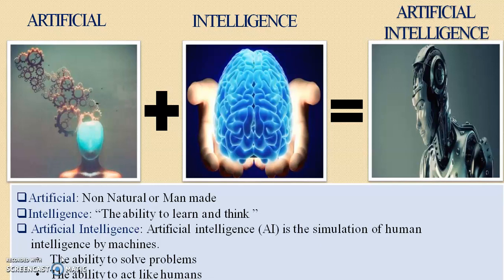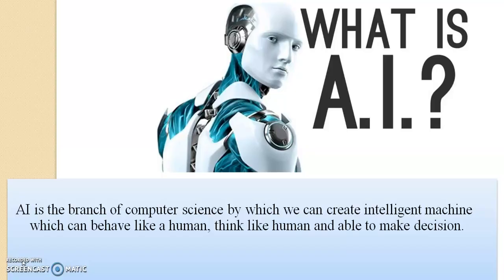Artificial intelligence is the ability to solve problems like a human, or the ability to act like a human. A more formal definition of artificial intelligence is: the branch of computer science by which we can create an intelligent machine which can behave like a human, think like a human, and is able to make decisions.